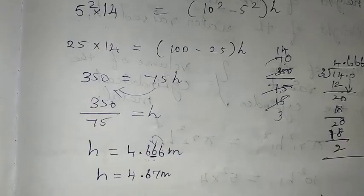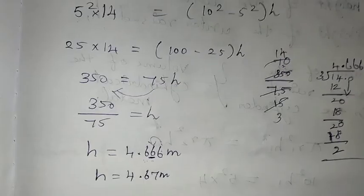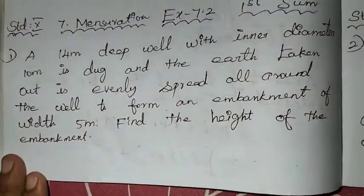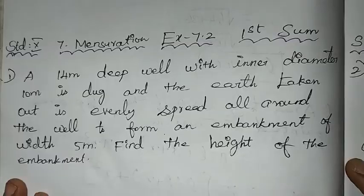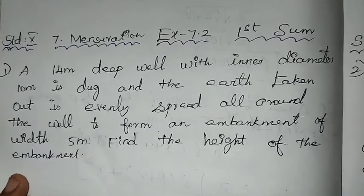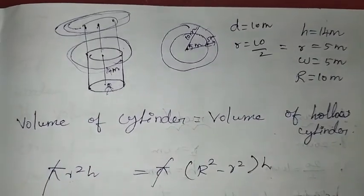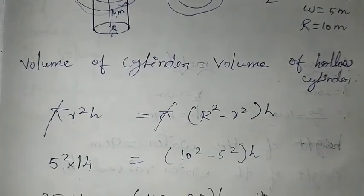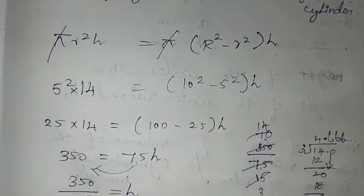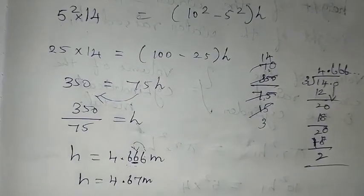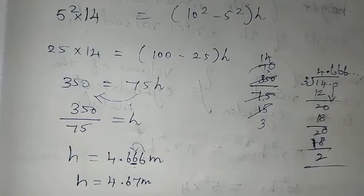So the height of the embankment is approximately 4.67 meters. It's a very simple concept: the volume of the cylinder equals the volume of the hollow cylinder embankment. I hope it is understood. Thank you so much for watching, students. Bye bye.